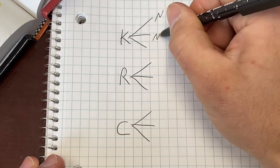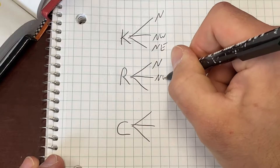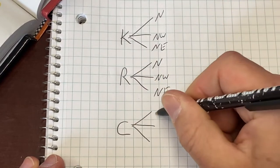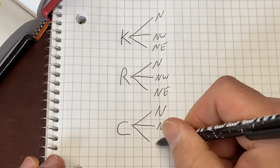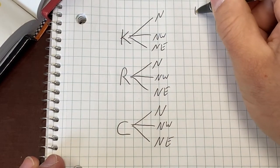So it's north, northwest, northeast. North, northwest, northeast. North, northwest, northeast. So what are our outcomes?